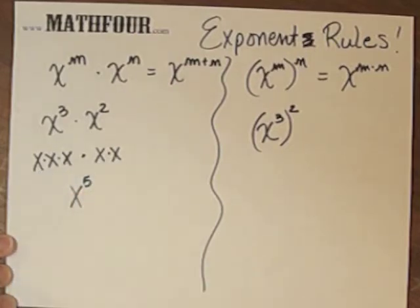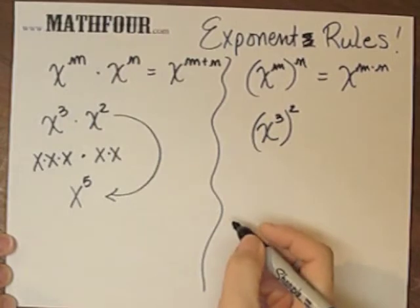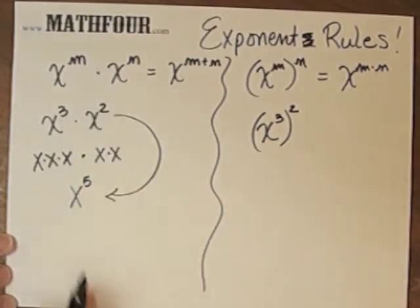So you just count them. 1, 2, 3, 4, 5. From this, it's easy to see that we add these two to get there.